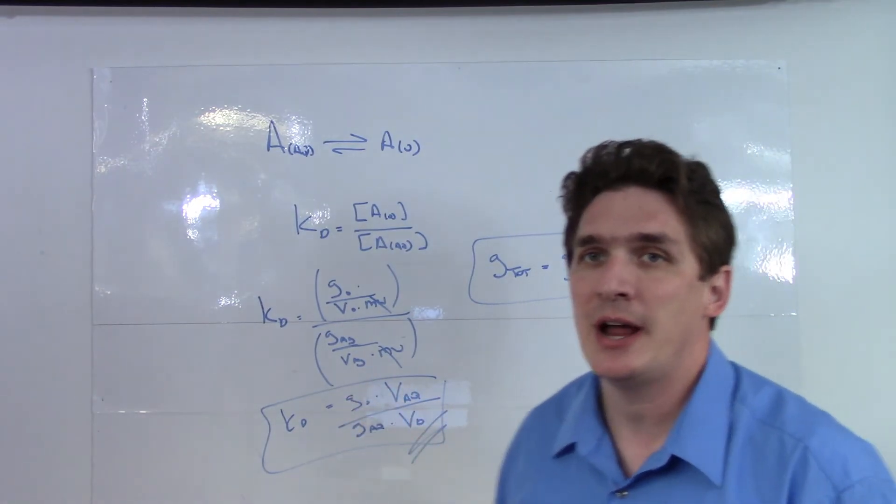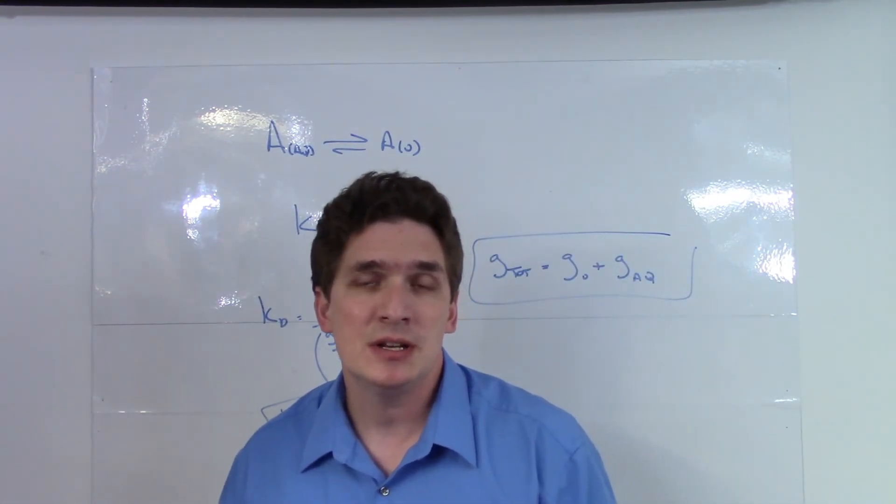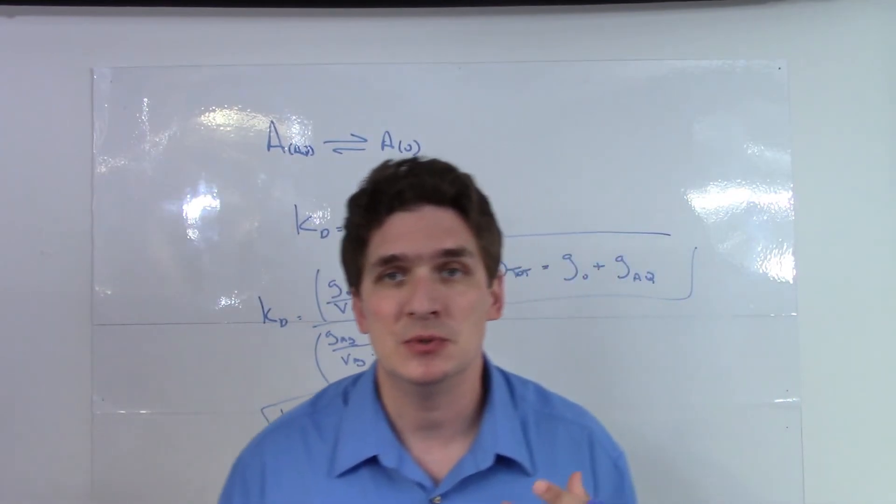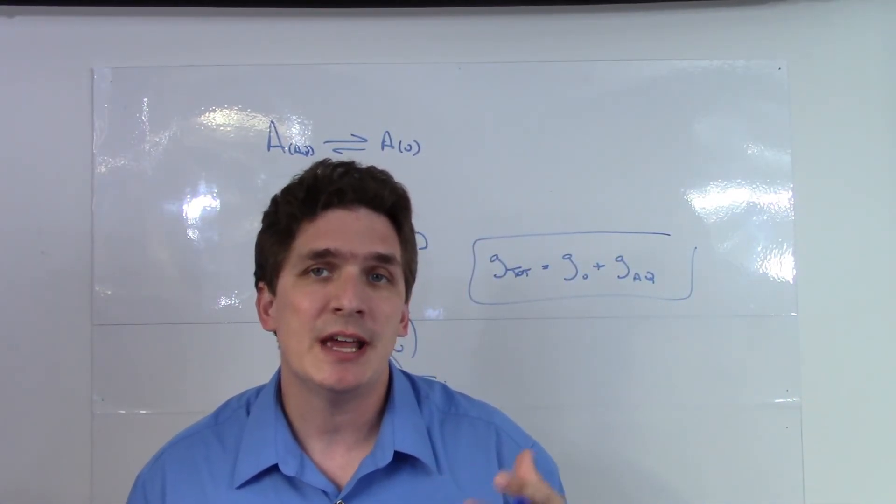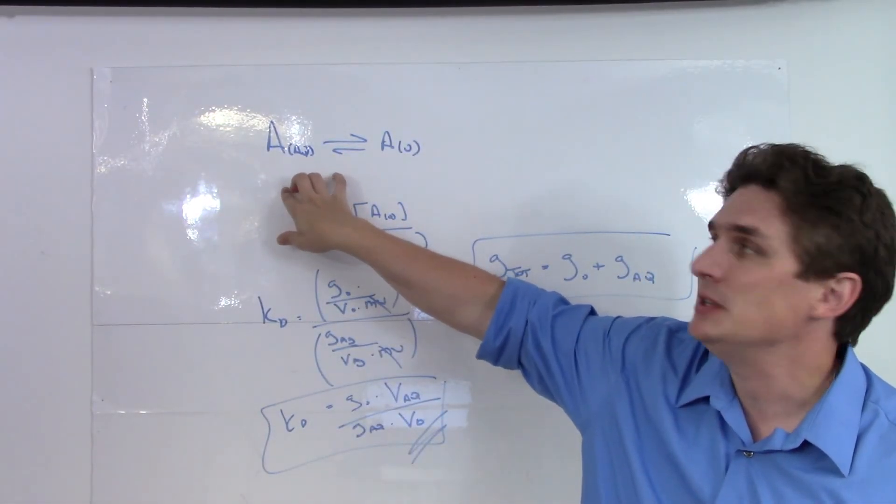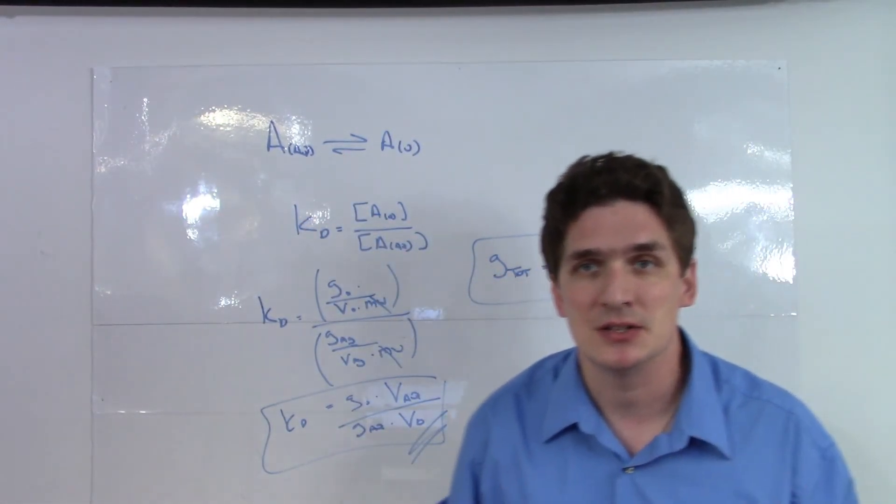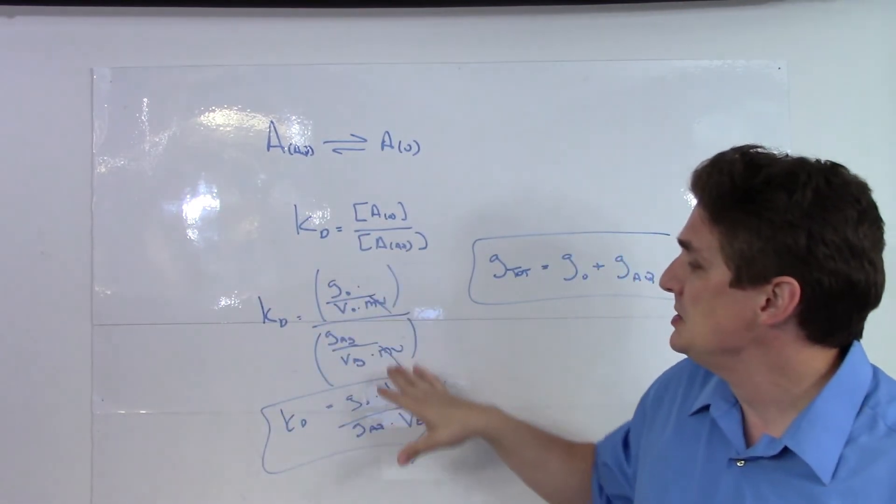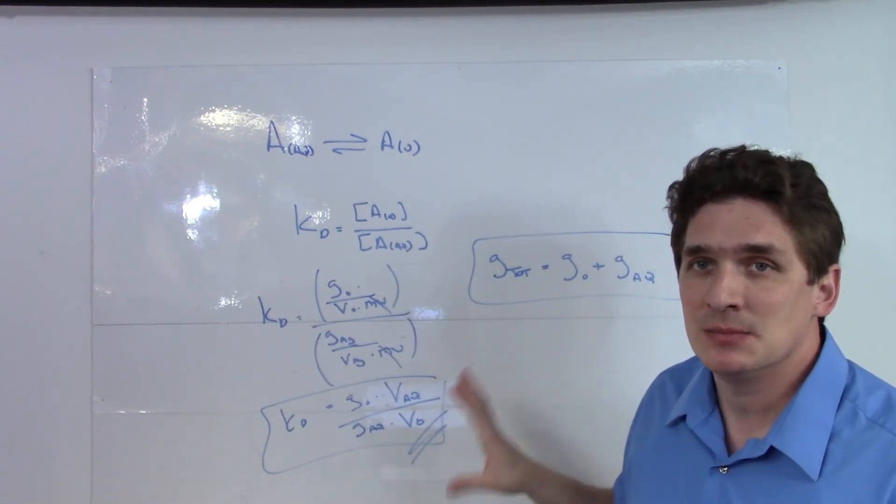What we want to find is the grams in the organic phase versus the grams in the aqueous phase. We can figure out their ratio. We can figure out what this number actually is, and use it to figure out basically how much is distributed between the two phases. So this is where KD comes from. It is just the equilibrium constant between the aqueous and the organic phase in terms of the concentrations, and we rearrange it using this relationship to get this simplified relationship.